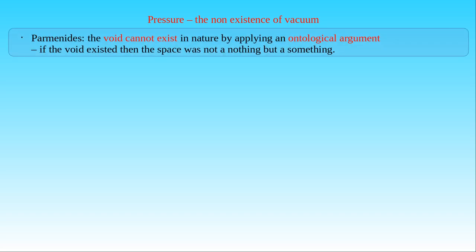Let us start with the history of the development of the ideas related to the first quantity: pressure. The concept of pressure, although in an indirect form, was already a subject of study among the ancient Greeks. Parmenides, the founder of the Eleatic school, might be the first in Western thinking who pondered about the vacuum or the void from the viewpoint of natural philosophy. He applied an ontological argument against the existence of the void in nature, stating that if the void existed then the space was not nothing but a something, which is a contradiction.